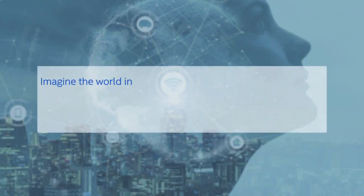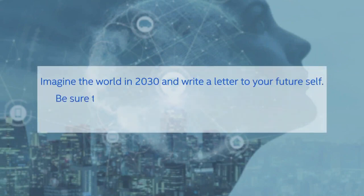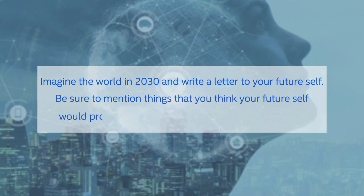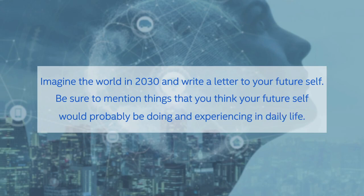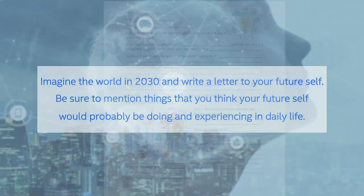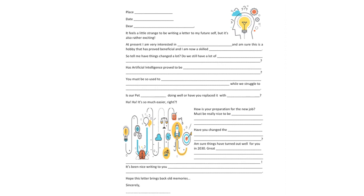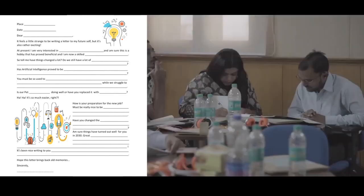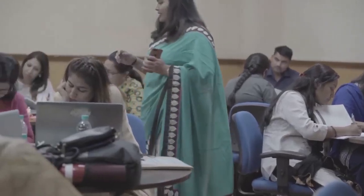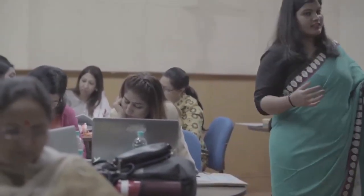Imagine the world in 2030 and write a letter to your future self. Be sure to mention things that you think your future self would probably be doing and experiencing in daily life. Now to reflect in this module, we would like to write a letter to our future self. There is a template already in the book — you can open it and see. You are writing a letter to your future self, so think futuristic. What could change in the coming 10 years?